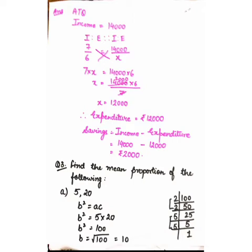The next question is: Find the mean proportion of the following. According to the formula, we will use b squared = ac. Here, a = 5 and c = 20. So, b squared = 5 × 20 = 100. Therefore b squared = 100.